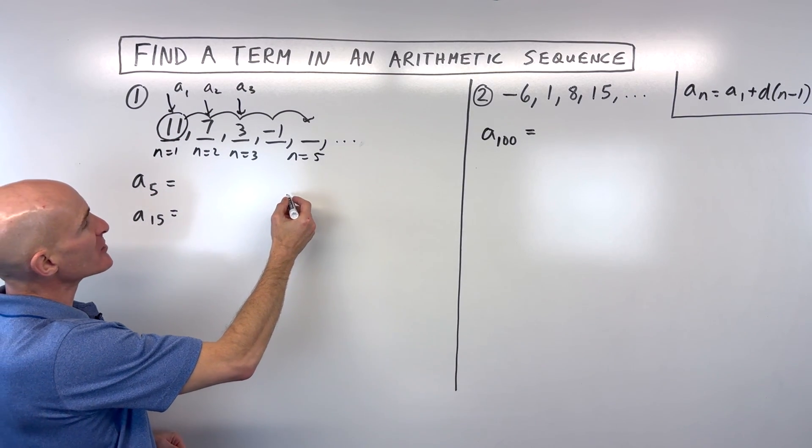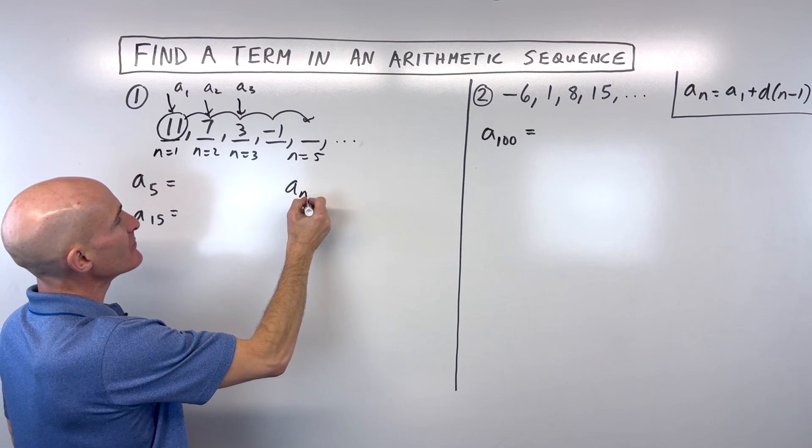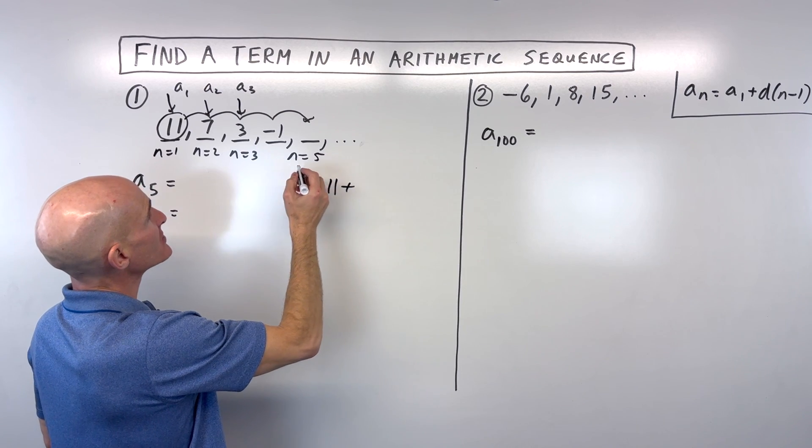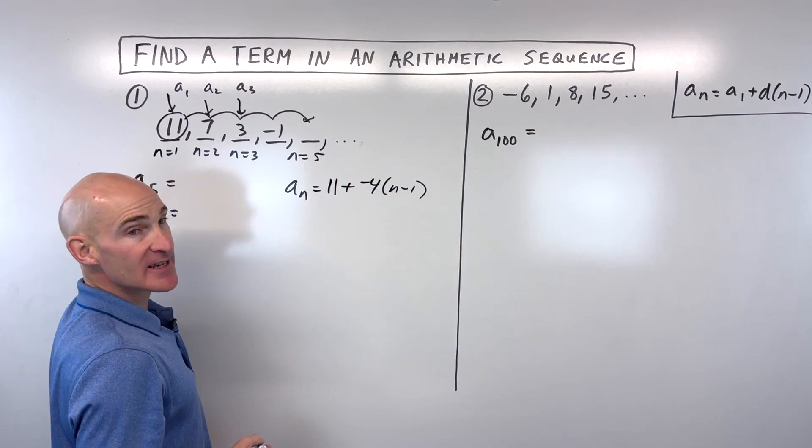So what we can do here is write a little formula, and we can see that a sub n, the value of the nth term, is going to equal the first term, which is 11, plus our common difference, which is a negative 4, n minus 1 times.